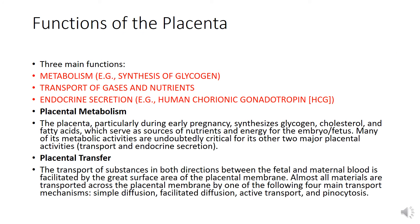The placenta has three main functions: metabolism, transport of gases and nutrients, and endocrine secretion. For its metabolic function, the placenta — particularly in early pregnancy — synthesizes glycogen, glycerol, and fatty acids, which serve as a source of nutrients and energy for the embryo or fetus. Many of its metabolic activities are critical for its other two major placental functions.